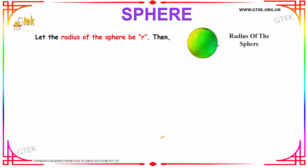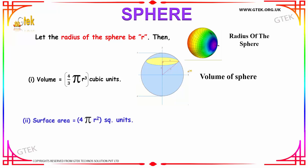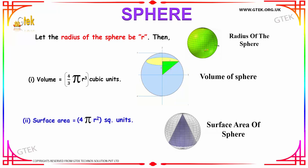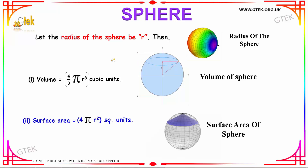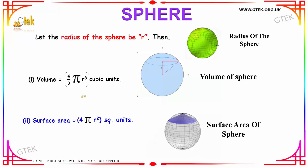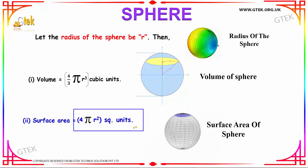Moving on, we have the sphere. The sphere has a radius, represented by R. The volume or capacity of the sphere is given by the formula (4/3)πR³ cubic units. The surface area of the sphere can be calculated using the formula 4πR² square units.